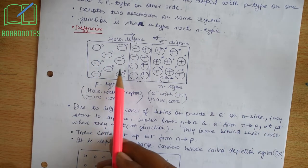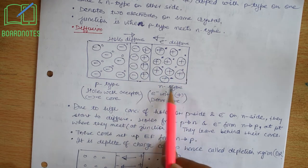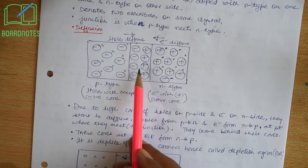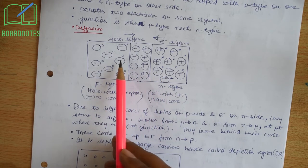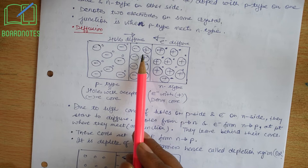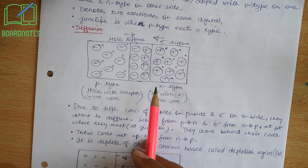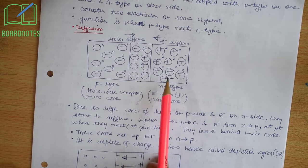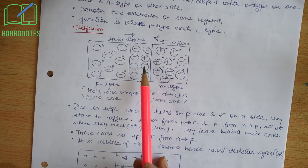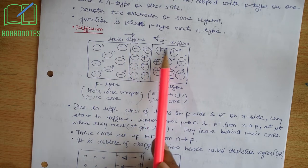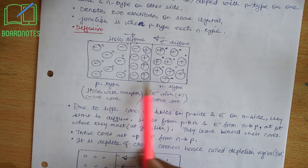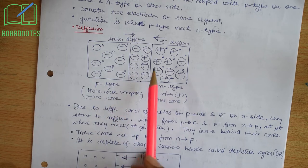Due to high concentration of holes on p-side and high concentration of electrons on n-side, they start to diffuse. When they diffuse, the holes and electrons recombine at the point where they meet. Electrons diffuse from n-side to p-side and holes from p-side to n-side. They recombine, thereby depleting both the charges and causing a depletion region at the center of this p-n junction, leaving behind their cores.